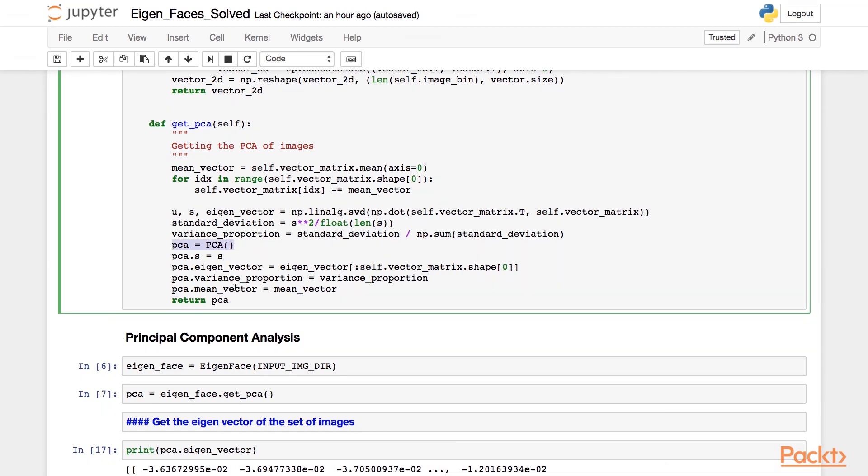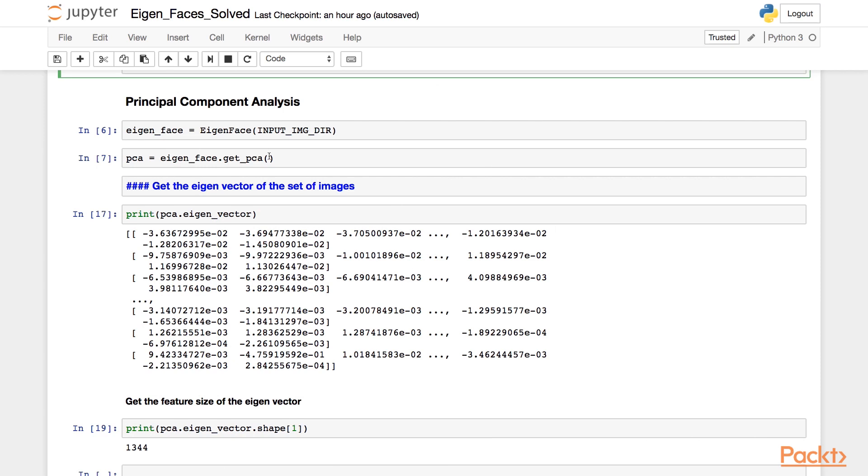We set these values, which are the eigenvector, the variance proportion, and the mean vector, and return them as the output of the PCA function.